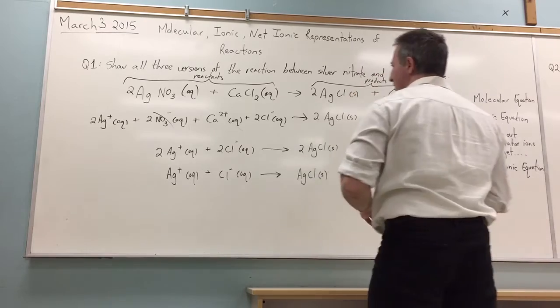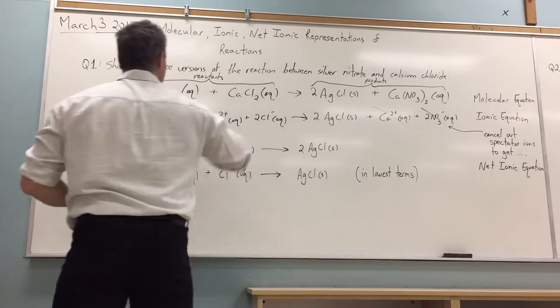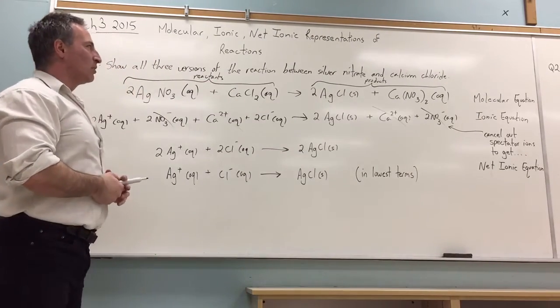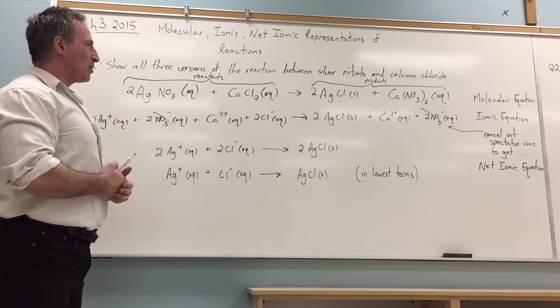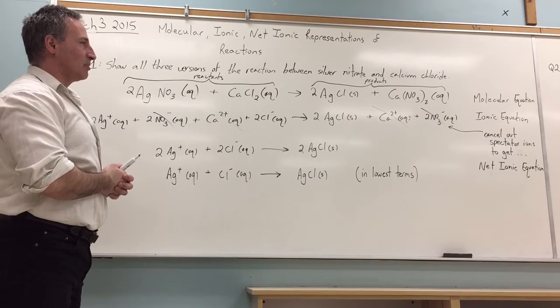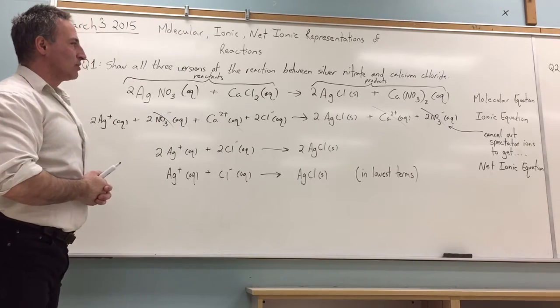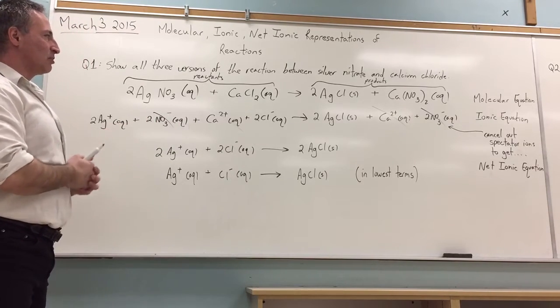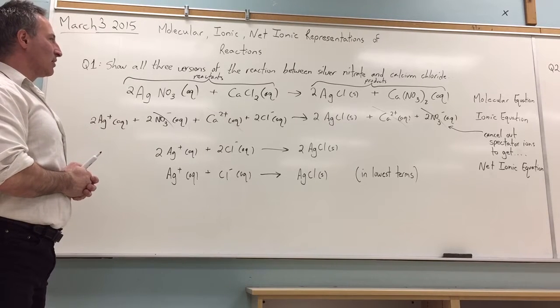So starting from a question that only names the reactants, you should be able to write their chemical formulas and then predict what the products are going to be. This is a double displacement reaction, so you'll be able to show how the metals switch places with the non-metals.